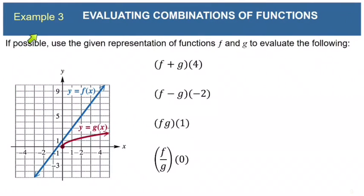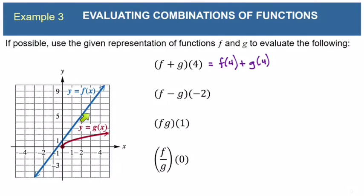Here's example 3. At first glance it might seem like we're doing something totally different, but we're really not — we're still evaluating combinations of functions, just using a graph instead of expressions. For f+g of 4, we need f(4) + g(4). When x equals 4, the f function is 9, and when x equals 4, the g function is 2. So f(4) + g(4) is 9 + 2 = 11.